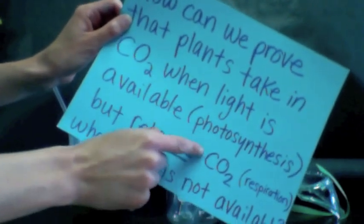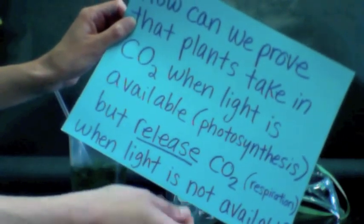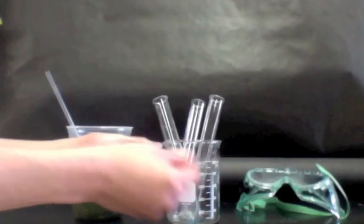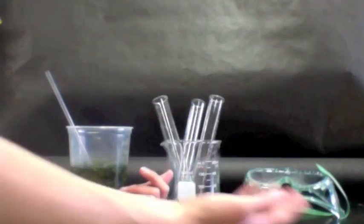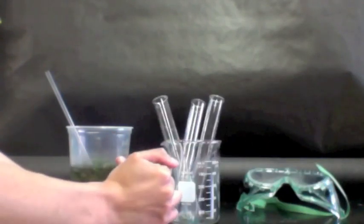But we're going to do an experiment today that shows that plants actually do both photosynthesis and respiration. So in photosynthesis, they are taking in carbon dioxide and releasing oxygen, but in respiration, which is what humans do, we take in oxygen and we breathe out carbon dioxide.